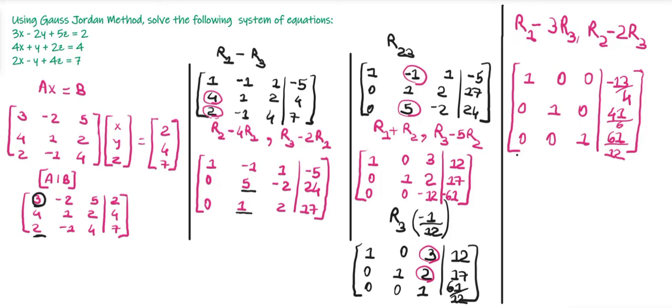Now as you can see, we have got our unit matrix, so we just write the corresponding system of equations to read off the solution. This is how you can solve a system of equations using the Gauss-Jordan method. You'll find the snapshot of this example on my website — the link is in the description. Thank you.